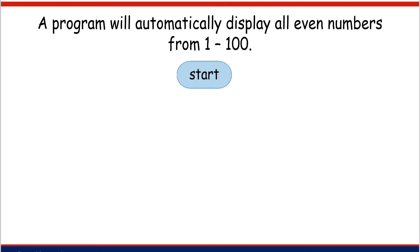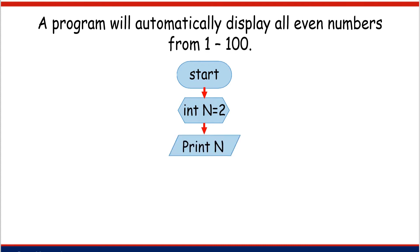Let's start writing the flowchart of this problem. The initialization symbol always appears at the first part of the sequence. In this example, I use n as the variable name. Next, we will write print n because we want to display the value of variable n. After that, we will write the pattern from the given problem — in this example, the pattern is plus 2.